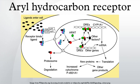The aryl hydrocarbon receptor is a protein that in humans is encoded by the AHR gene. It is a ligand-activated transcription factor involved in the regulation of biological responses to planar aromatic hydrocarbons. This receptor has been shown to regulate xenobiotic metabolizing enzymes such as cytochrome P450. The aryl hydrocarbon receptor is a member of the family of basic helix-loop-helix transcription factors.